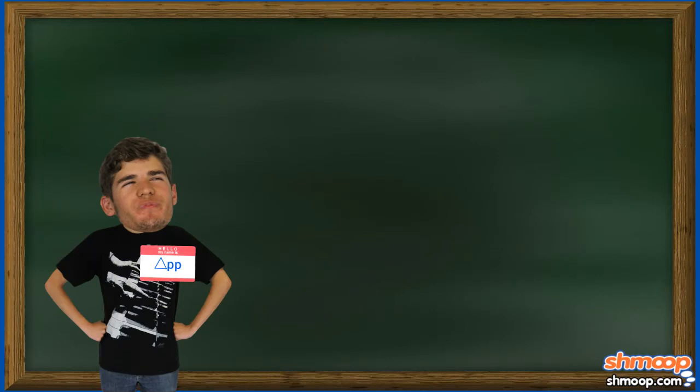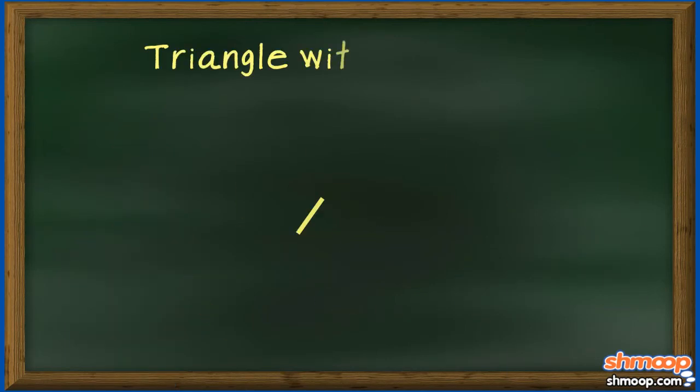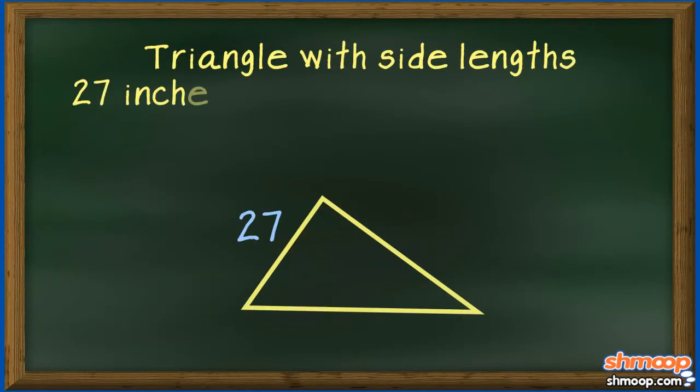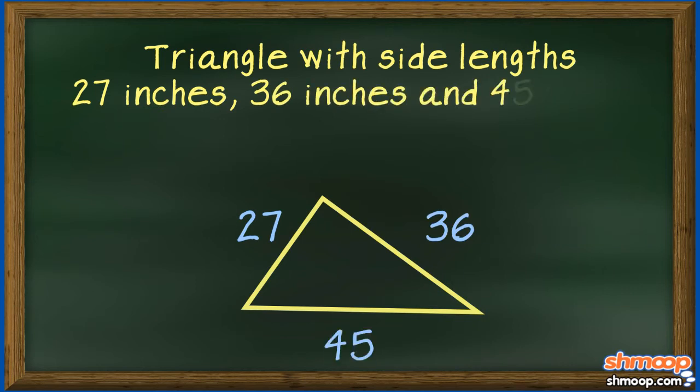The second oldest brother, Tripp, got a triangle with side lengths of 27 inches, 36 inches, and 45 inches.